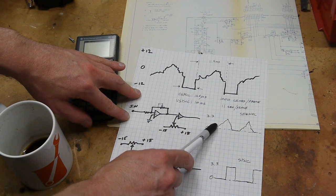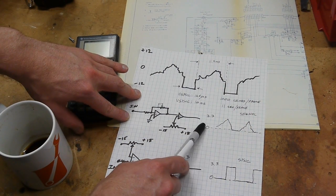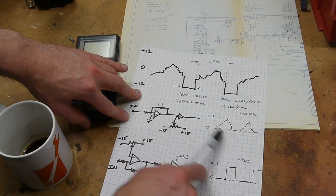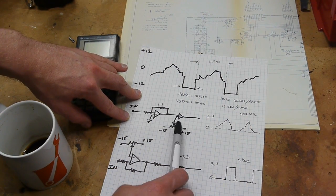After these two, we get a signal that is just the video data, hopefully taking up as much dynamic range as possible, 0 to 3.3, and the sync pulse is not really there anymore.